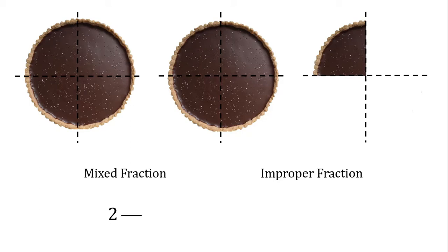Looking at the furthest pie on the right, you can see that it's not all there because I ate some of it. There's one slice left. But how many slices would there have been if I hadn't eaten them all? That's the denominator — how many equal parts would there be in the whole? I can see one, two, three, four. There would be four equal pieces, so four. So how many pies are there left? As a mixed fraction, it's two and one-fourth. But what about as an improper fraction?